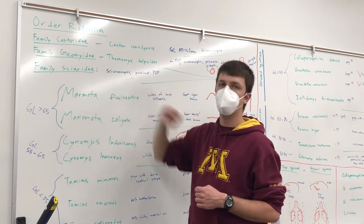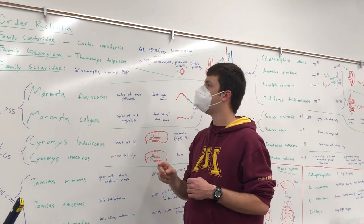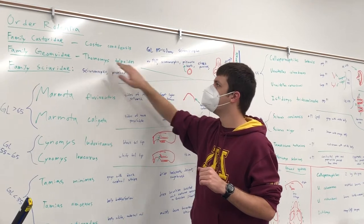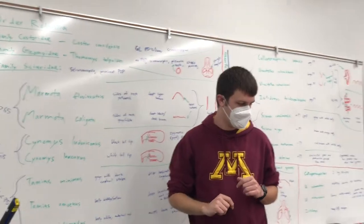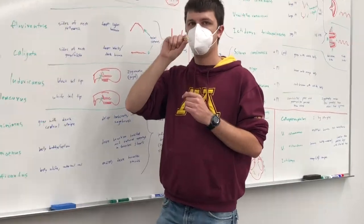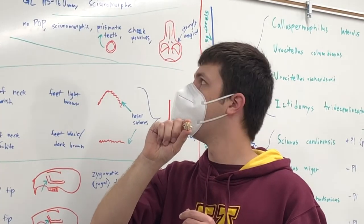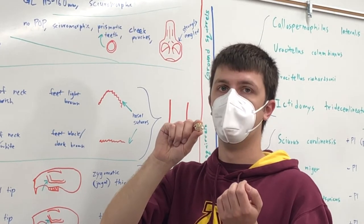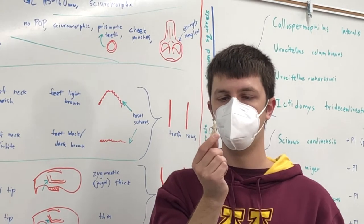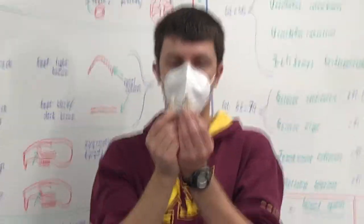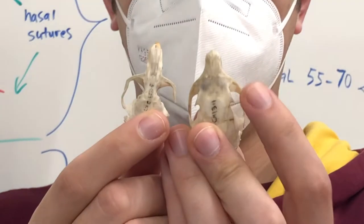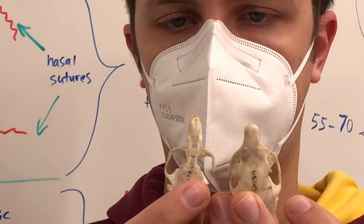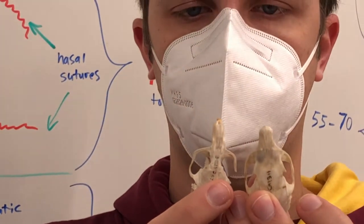The second family is Geomyidae — these are pocket gophers. We have two species in Montana, but the second, the Idaho pocket gopher, is really rare, so we're just going to focus on Thomomys talpoides for this class. This skull is sciuromorphic, so you can see that plate there, like the beaver and the squirrels we're going to see. However, unlike the squirrels, there is no post-orbital process. Here's a red squirrel for comparison — you can see that pointy bit pointing backwards, which is the post-orbital process, a bit of bone sticking out behind the eye. The pocket gopher doesn't have one.